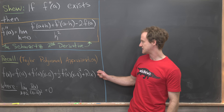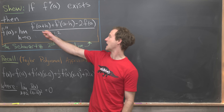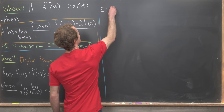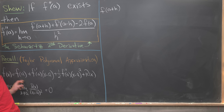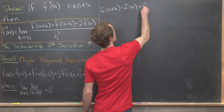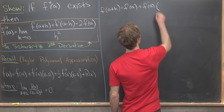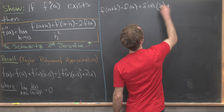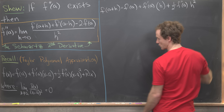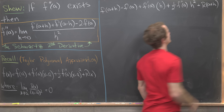What I want to do is take this Taylor polynomial approximation and plug in a plus h and a minus h. So we'll have f of a plus h — setting x equal to a plus h — giving us f of a plus f prime of a times h (since a plus h minus a is just h), plus one half f double prime of a times h squared, plus the remainder r of a plus h.